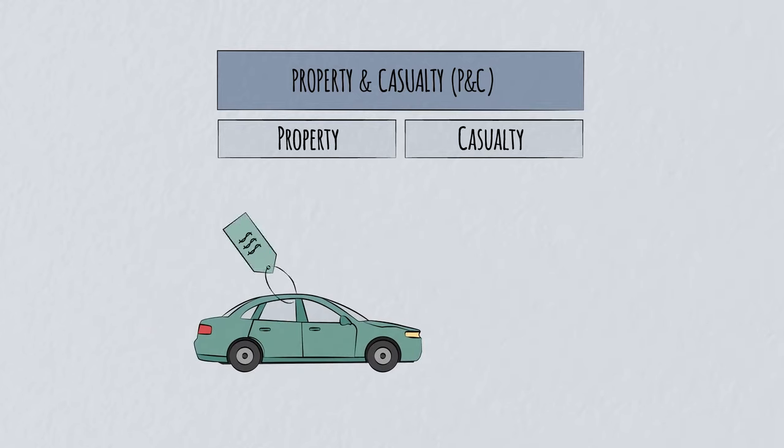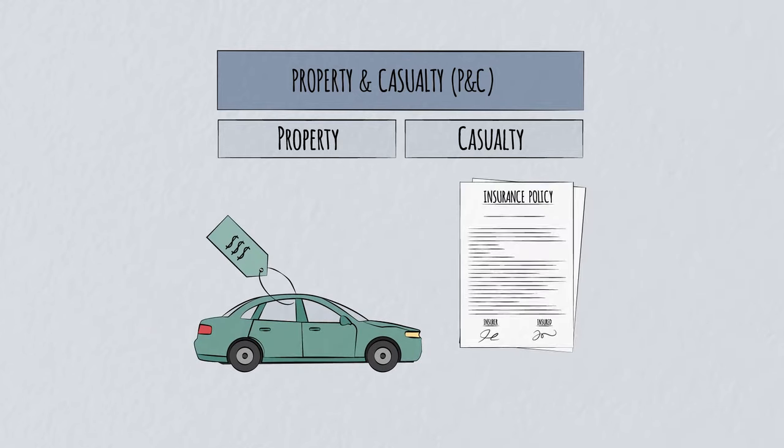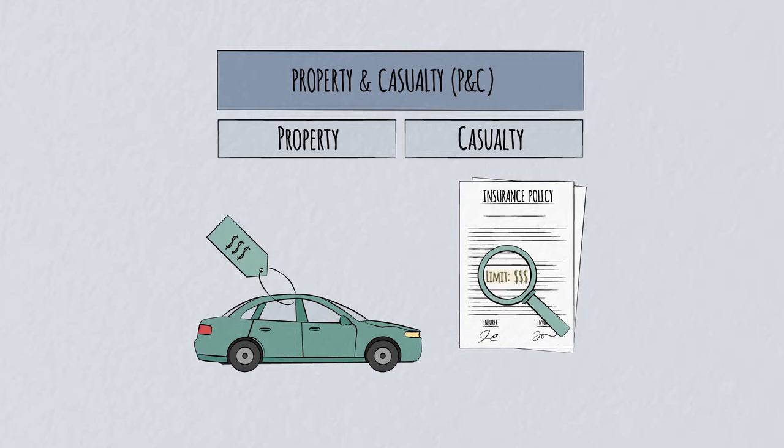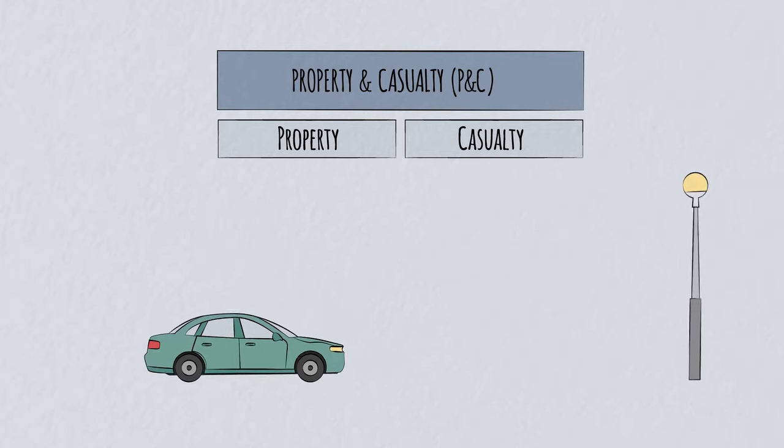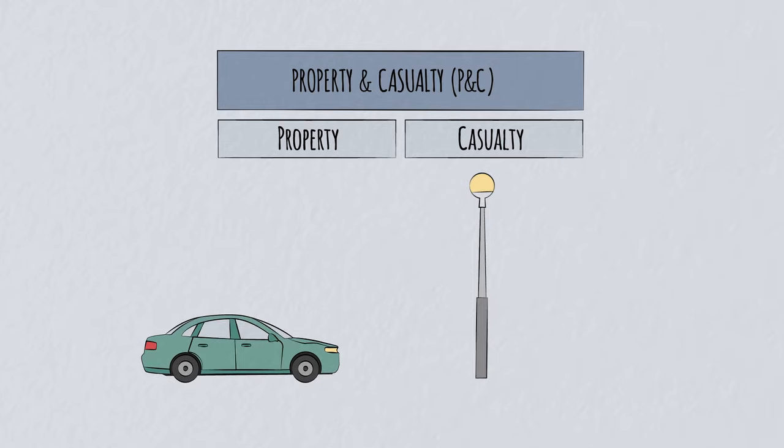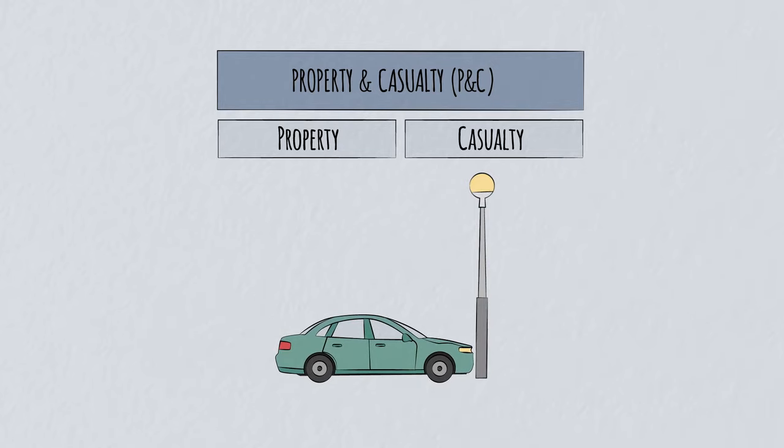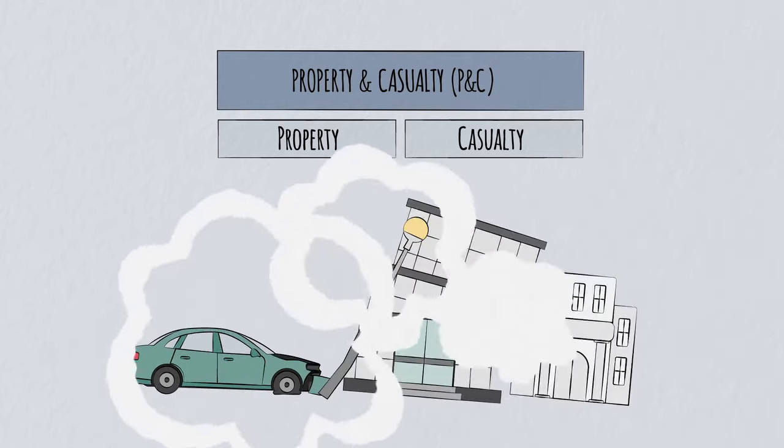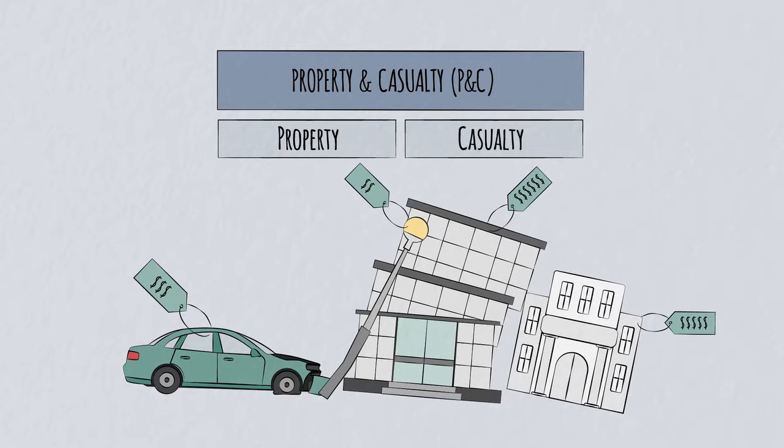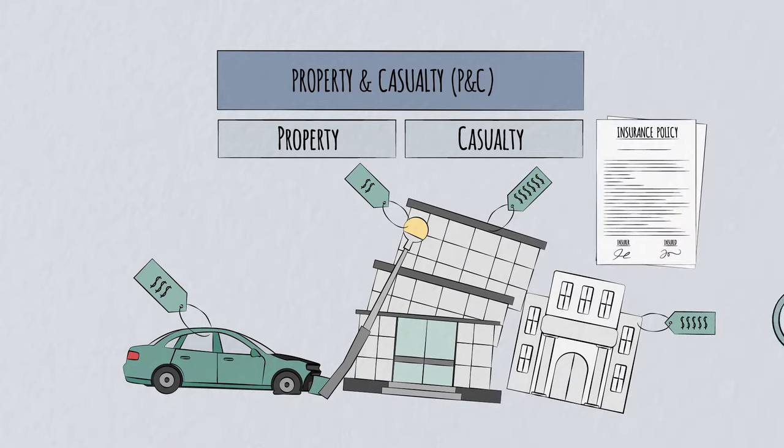The value of property is broadly fixed, so the maximum cost or exposure is defined in the policy. For casualty, the range of outcomes is unknowable. A car accident could cause no harm or it could result in millions of dollars of damages. To manage their exposure, insurers usually set a limit on casualty insurance.